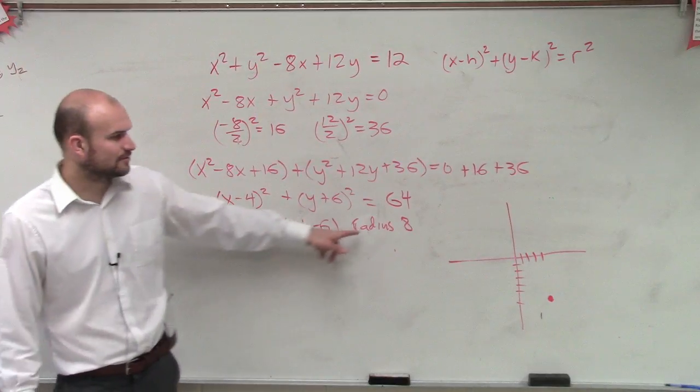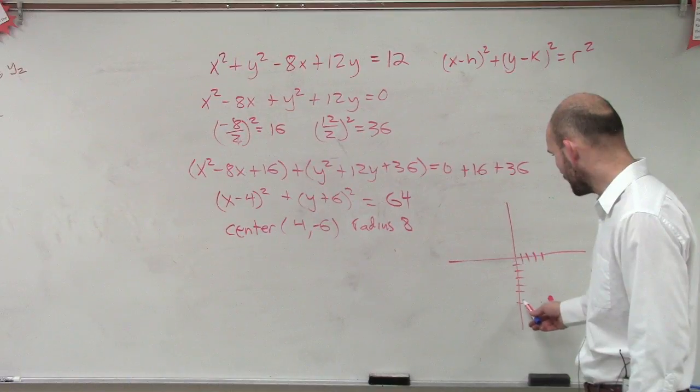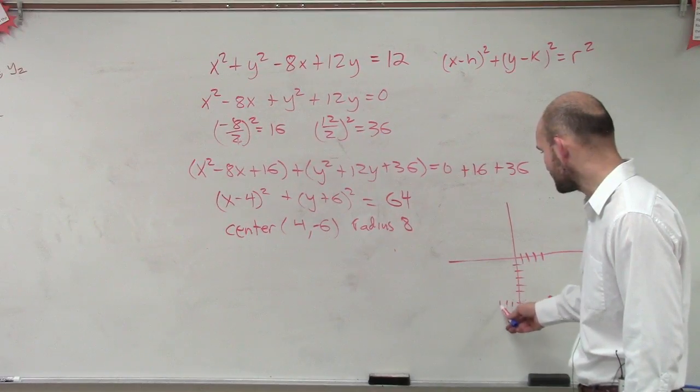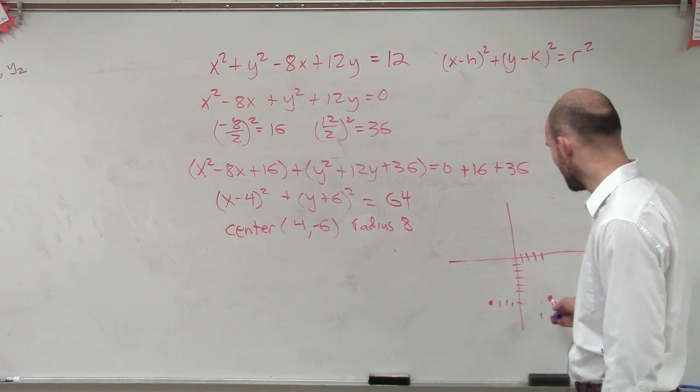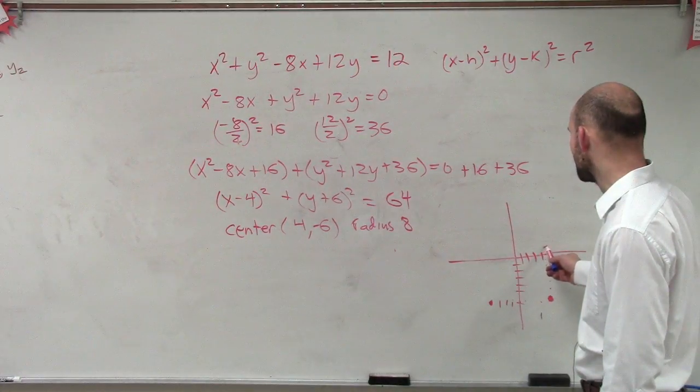Then let's find the radius. The radius is 8, so that means I can go to the left 8: 1, 2, 3, 4, 5, 6, 7, 8. That'd be an endpoint. And then up 8: 1, 2, 3, 4, 5, 6, 7, 8.